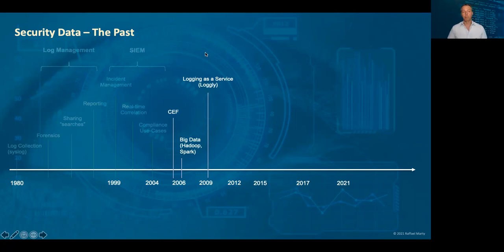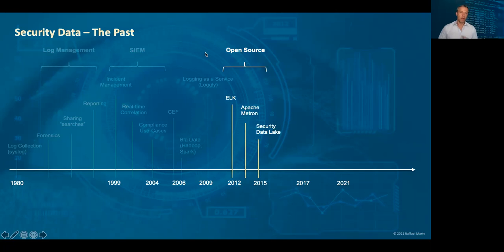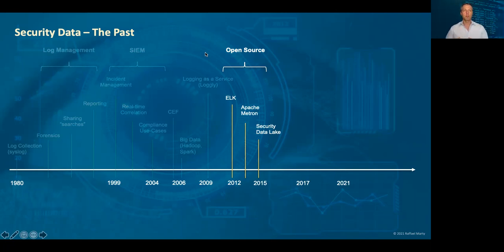Then in 2012, we had the first logging-as-a-service product on the market, which was Logly, putting this whole thing into the cloud. After that, we had a little bit of an open source era between 2012 and maybe 2016 — the ELK stack became very famous. That's Elasticsearch, Logstash, and Kibana, an open source stack that the company Elastic is still supporting, and many people use it for log management. There was also OpenSOC, which transitioned into Apache Metron — a project trying to build an open source framework for big data security analytics. Unfortunately it lost steam and got somewhat abandoned, partly because there was also a competing standard, Apache Spot. Having two competing standards out there is not always the best approach, and unfortunately my efforts to bring those two together failed.